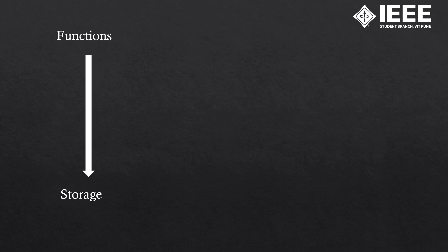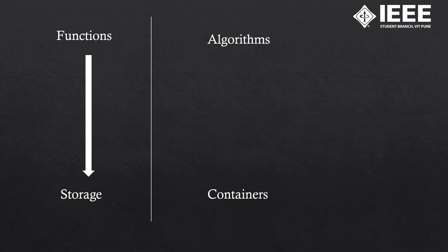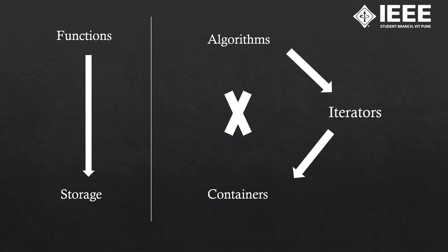Normally we have any kind of storage, like arrays, and we have functions that manipulate the data present inside the storage. In STL we call them containers, and we have algorithms which act as functions. But they don't interact directly — instead we have iterators which help the algorithms manipulate the content present inside these containers. That is the basic structure of STL.